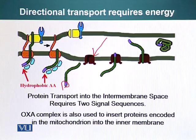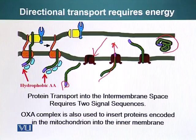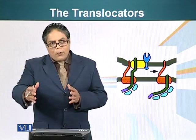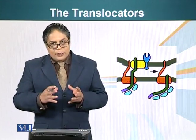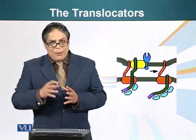OXA proteins also have a channel in them, so these proteins are threaded into the inner membrane space, where they are allowed to fold into their normal configuration. Proteins that need to enter the inner membrane space require two signal sequences and also require the help of the OXA complex to achieve that goal. We have now seen mechanisms by which proteins with a signal sequence are imported into the mitochondria, and how proteins tagged for the inner membrane space are transported there.